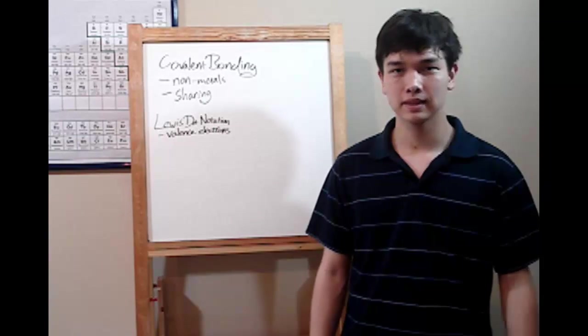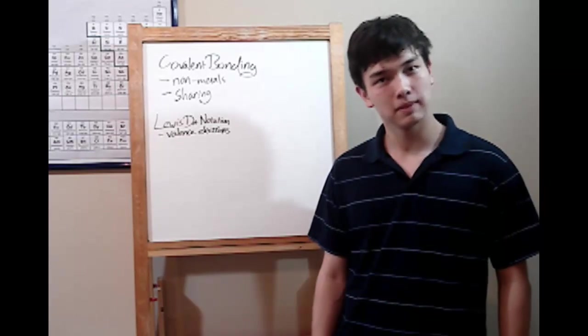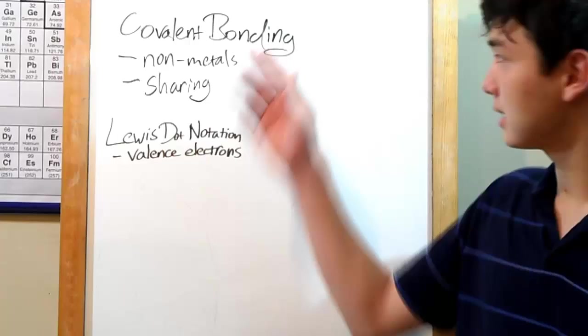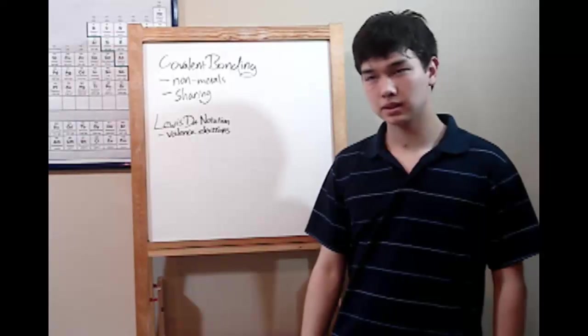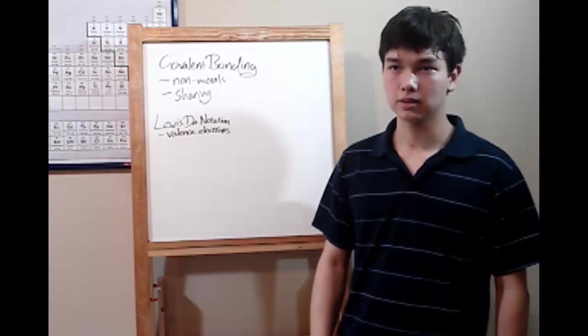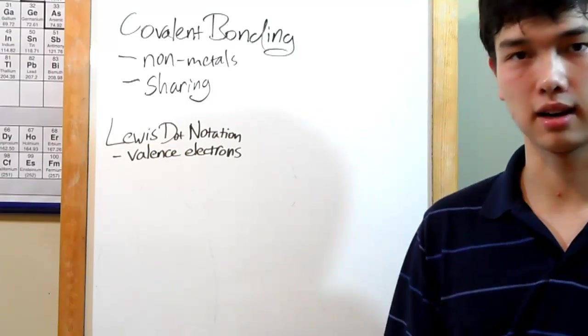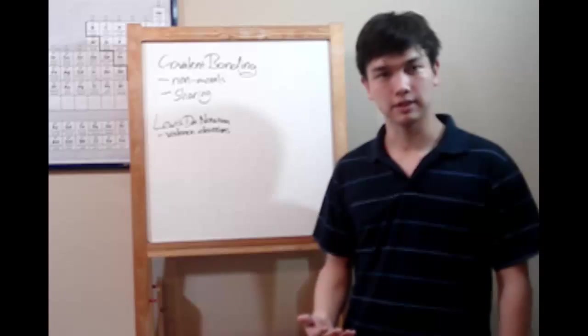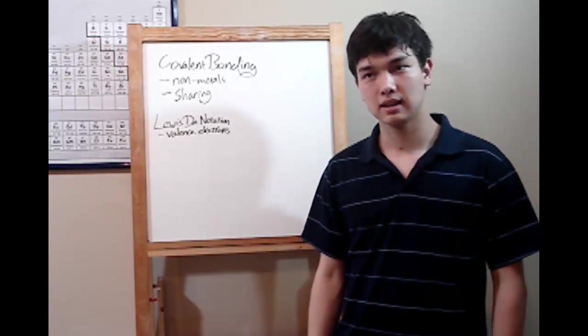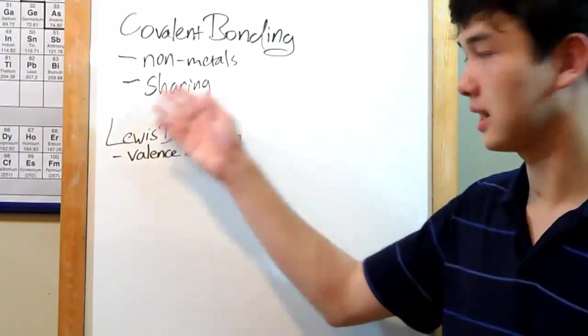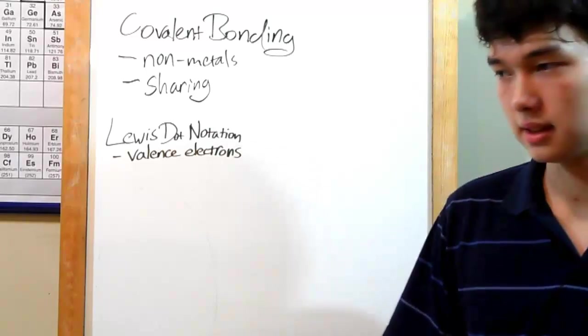You all might remember ionic bonding. That was one way to fill the octet rule, basically to get the same electron configuration as a noble gas. The other way is covalent bonding. With covalent bonding, it can only occur between nonmetals, even though ionic bonding can occur between metals and nonmetals. The other difference is that with ionic bonding, electrons are either gained or lost. Covalent bonding has a sharing of electrons instead.